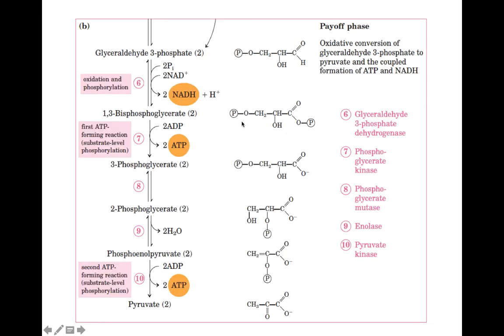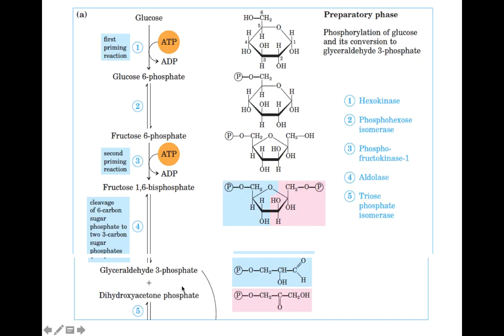Similarly, glyceraldehyde 3-phosphate and dihydroxyacetone phosphate, they are both interconvertible to each other. Glyceraldehyde 3-phosphate and dihydroxyacetone phosphate can be converted between each other.